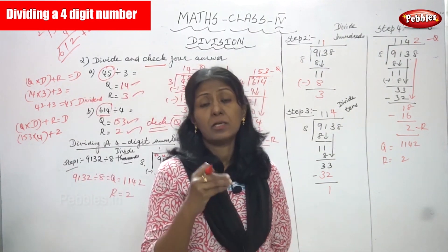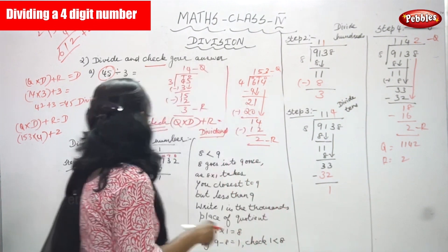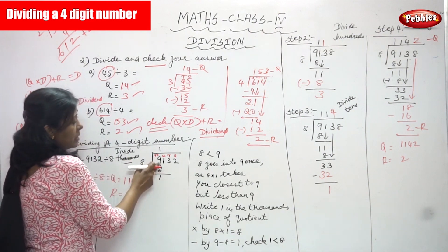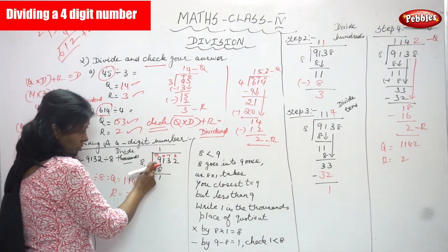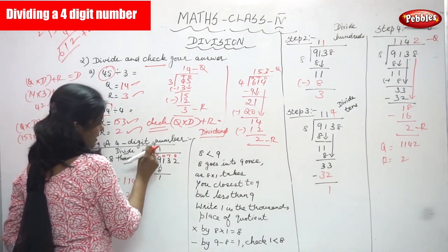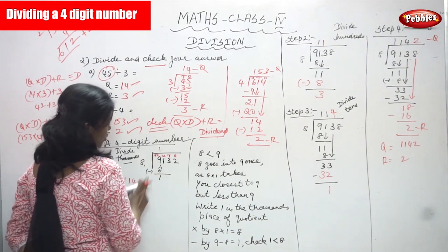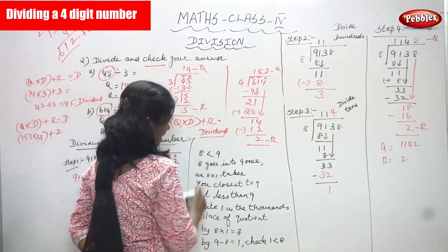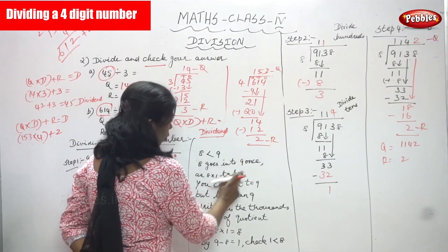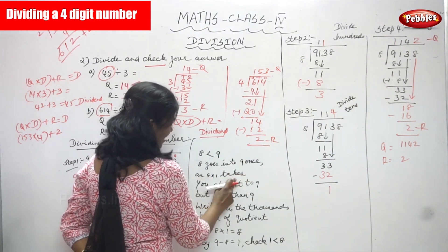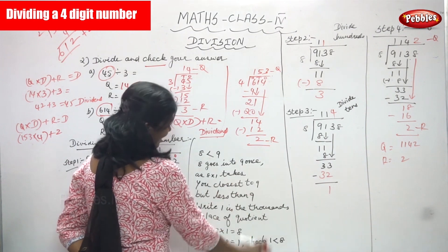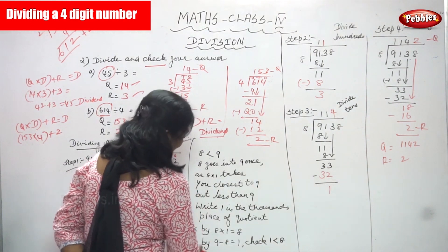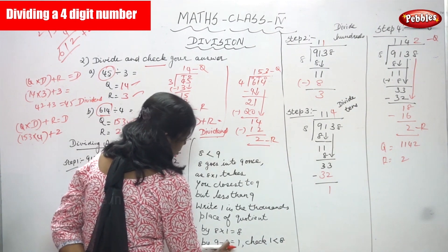Start with thousands — divide thousands. So nine thousand, that is the thousands place value. Nine divided by 8: 8 is lesser than 9, so 8 goes into 9 once. 8 into 1 takes you closest to 9 but less than 9. Write 1 in the thousands place of the quotient. Multiply: 8 into 1 equals 8. Subtract: 9 minus 8 equals 1.